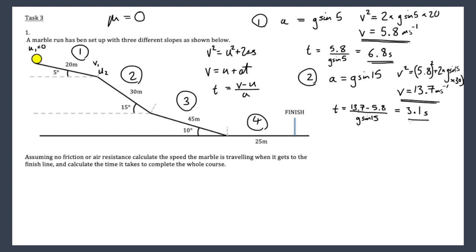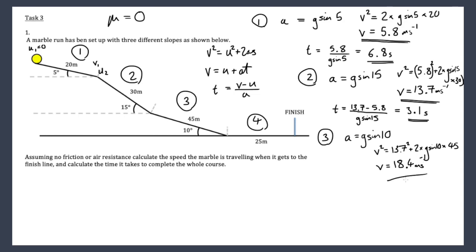Section three: acceleration is g sin10. To find velocity: v² = 13.7² + 2 × g sin10 × 45, giving v₃ = 18.4 m/s. The marble is really going for it at this point. Time for section three: t = (18.4 − 13.7) / (g sin10) = 2.8 seconds.